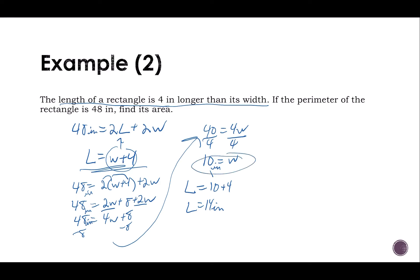Now that I know my width and my length, I can find my area. Area is going to be 14 inches times 10 inches. So my area is 140 inches squared. So let's go. Thank you.